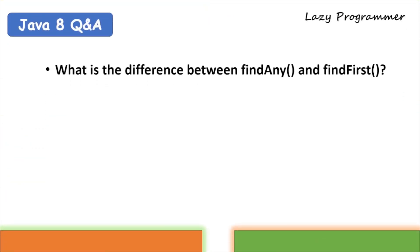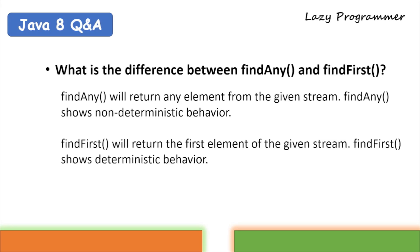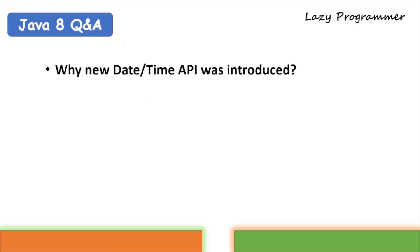What is the difference between findAny() and findFirst()? findAny() returns any element from the given stream and shows non-deterministic behavior — we cannot determine which specific element it will return. findFirst() returns the first element of the given stream and shows deterministic behavior, meaning it will always return the first available element in the stream, unlike findAny().